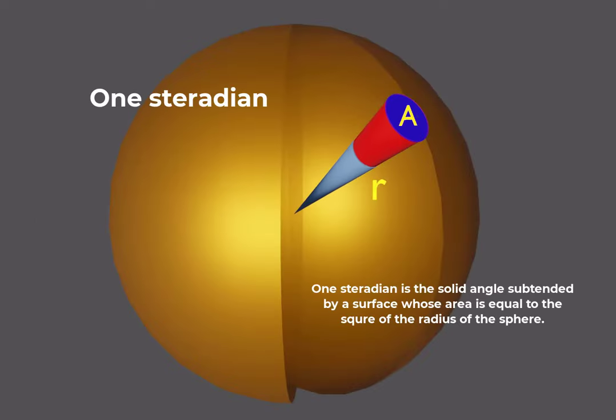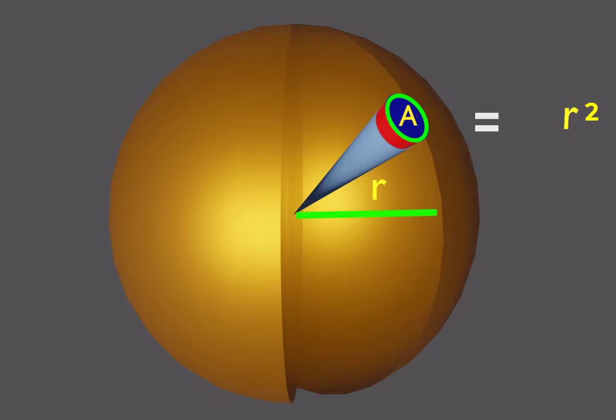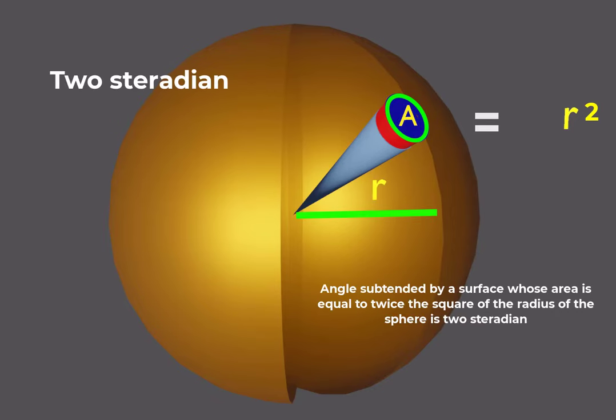One steradian is the solid angle subtended by a surface whose area is equal to the square of the radius of the sphere. The angle subtended by a surface area equal to twice the square of the radius of the sphere is two steradian.